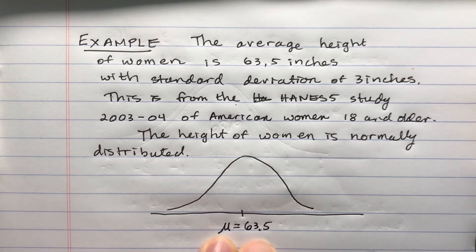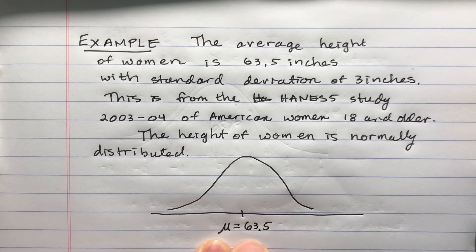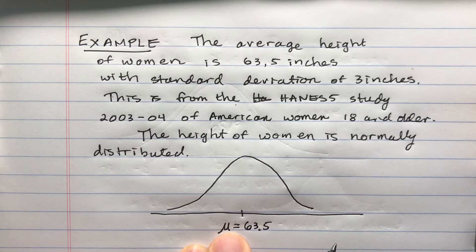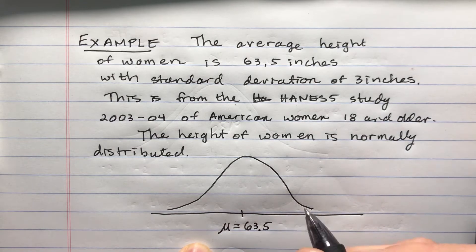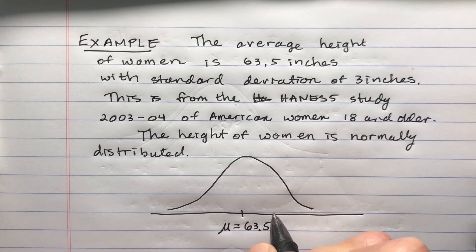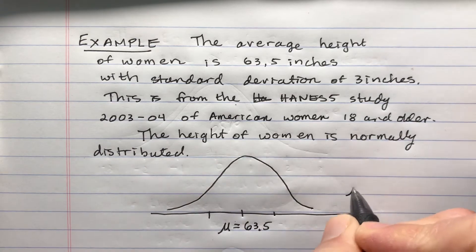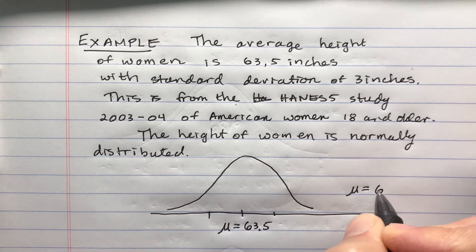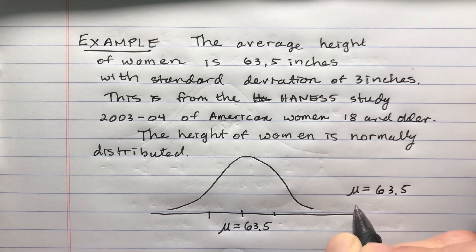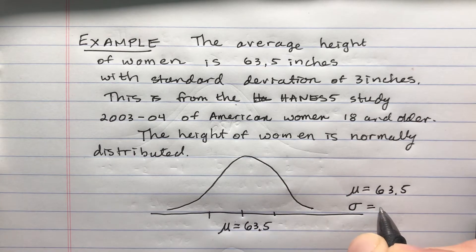This is the population mean, and we use the Greek letter mu. Let's write this down. Mu is 63.5, and sigma is the standard deviation, is 3.